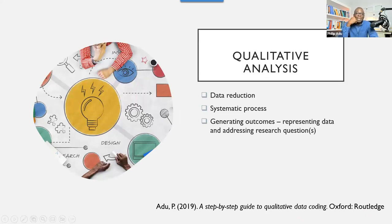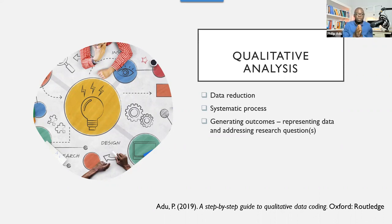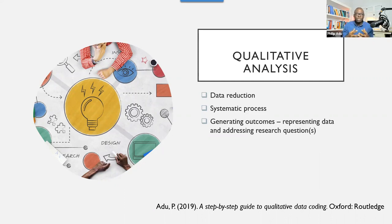So what is qualitative analysis? Qualitative analysis is all about data reduction. What you are doing is trying as much as possible to reduce the data. You are going through the data and extracting information that you think is going to help you to address your research question. And then what you do is you develop themes and then use them to address your research question.